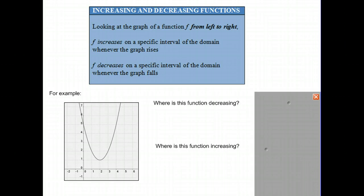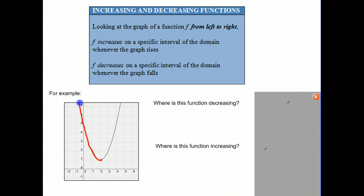For example, if we look at our graph down below right here, we see a parabola, which is a quadratic function, and the question is: where is the function decreasing? You should notice that it's decreasing going from left to right — from negative infinity — and it keeps coming down until we get to this point right here at x equals 2 and y equals 1. So this is the interval where it is decreasing.